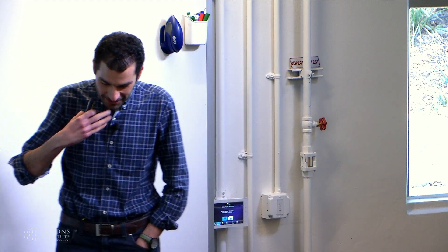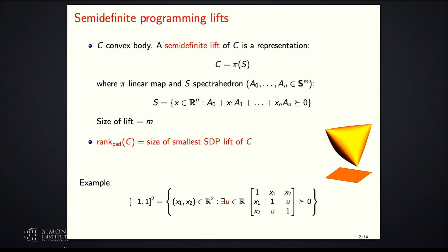Just to make sure we're all on the same page, the main concept of this talk is the notion of a semidefinite lift. If I have C as a convex body, I say C has a semidefinite lift if it can be written as a projection — the image under a linear map — of a spectrahedron. A spectrahedron is a set defined using a linear matrix inequality: symmetric matrices of size M, A_0 up to A_n, and you look at the set of X such that this linear matrix is positive semidefinite.